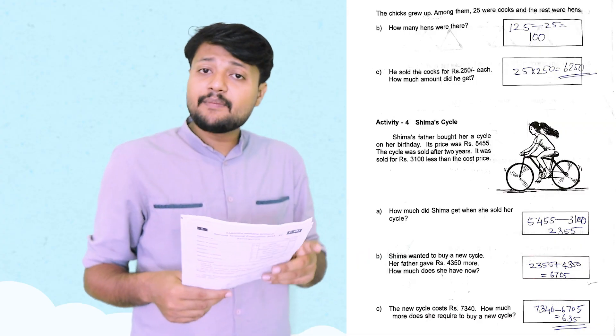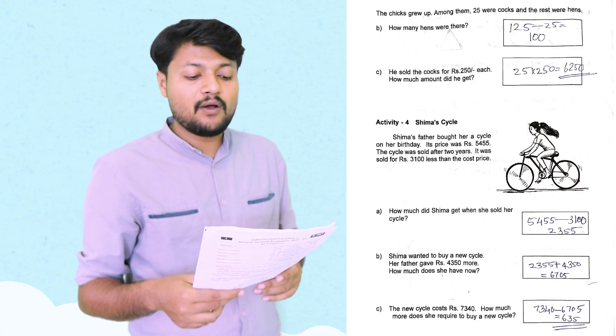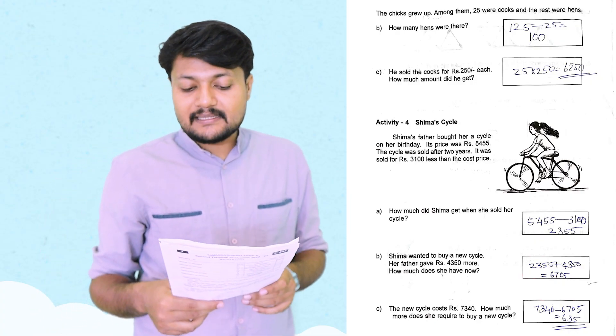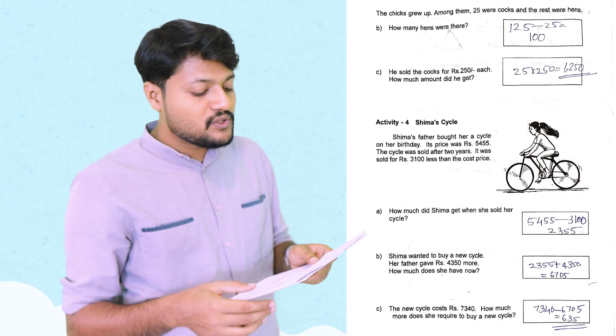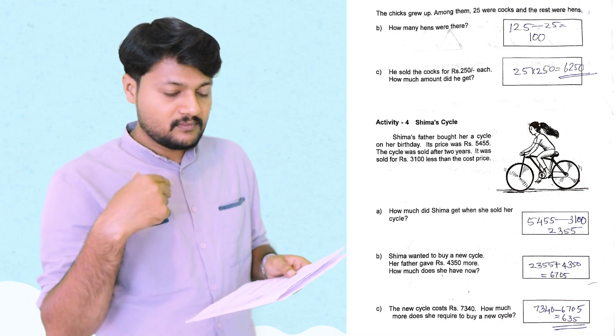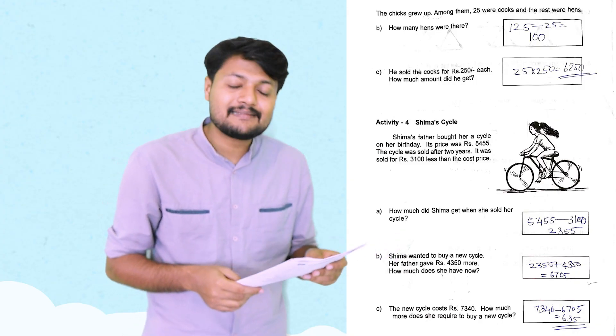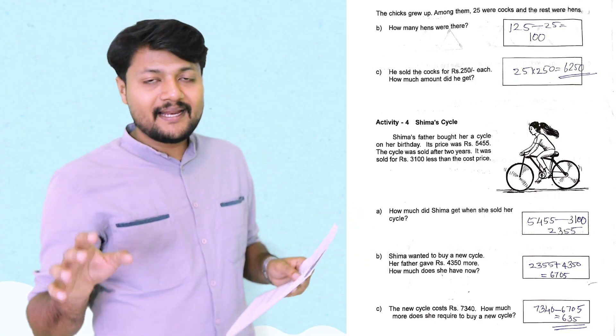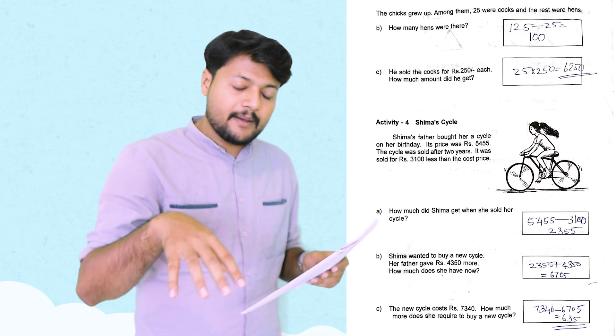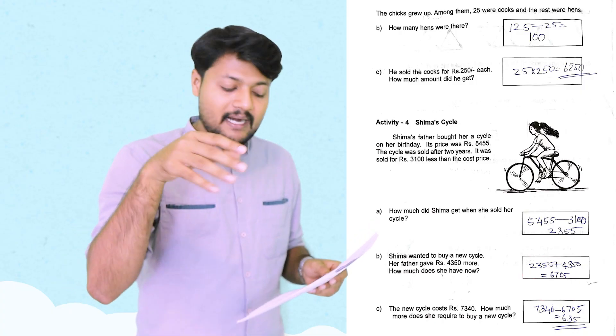The next activity is 4: Shima's cycle. Shima's father bought her a cycle on her birthday. Its price was Rs. 5,455. The cycle was sold after 2 years. It was sold for Rs. 3,100. Less than the cost price.